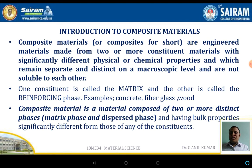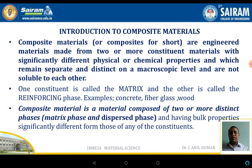Now first we will know what a composite is. A composite is an engineering material made up of two or three different constituent materials which are significantly different - either of the same composition or of different composition. The different composition may be in the physical or chemical properties, and which remains separate and distinct on the macroscopic level and are not soluble to each other.